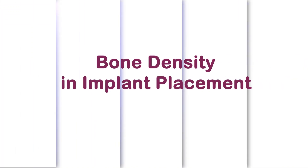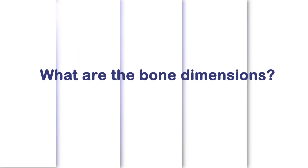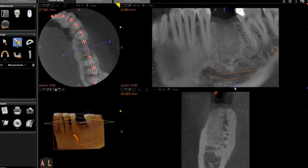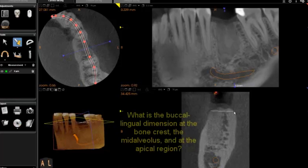The easiest way to know the dimensions of the bone is to take a dental CT scan. Seeing the bone volume in 3D takes the guesswork out of implant surgery. Here I am in CareStream Dental's Conebeam interpretation software, looking at the bone in cross-section at the site of the future implant. I go through a checklist in my mind as I read the bone.